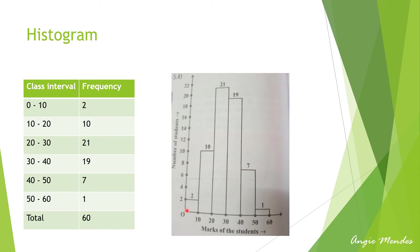Following this, we represent the data. We plot marks on the x-axis with equal markings and no space: 0 to 10, 10 to 20, 20 to 30, 30 to 40, 40 to 50, and 50 to 60. The number of students (frequency) is plotted on the y-axis. For 0 to 10 we have 2 students; 10 to 20 we have 10 students; 20 to 30 we have 21 students; 30 to 40 we have 19 students; 40 to 50 we have 7 students; and 50 to 60 we have 1 student. This is how we represent data using a histogram.